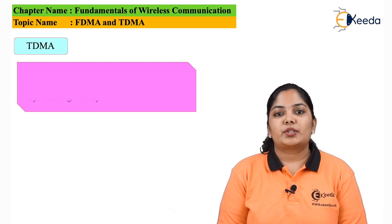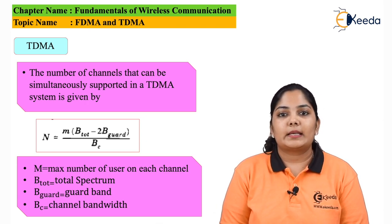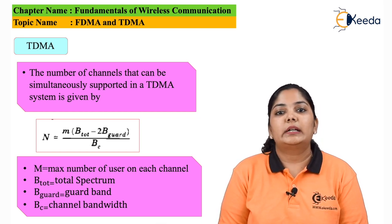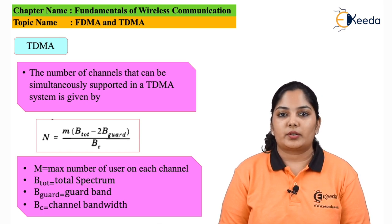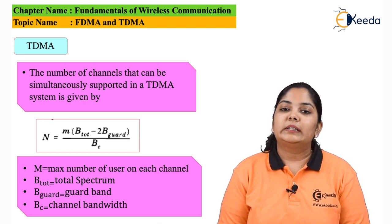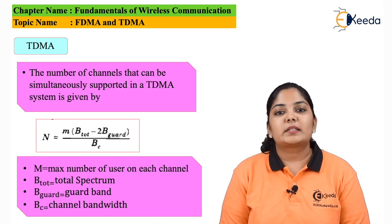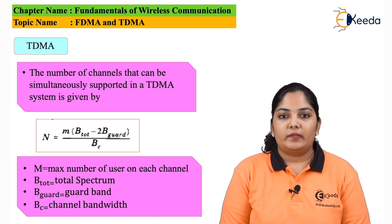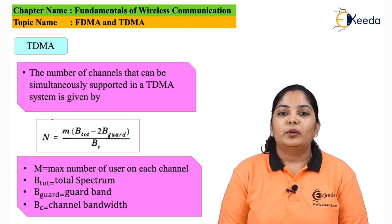The TDMA channel count formula is similar to that of FDMA with one additional value, M. M stands for the maximum number of users using a single TDMA frame. The total number of channels N is given by: N = M × (Bt − 2 × guard band) / Bc, where Bc is the channel bandwidth.